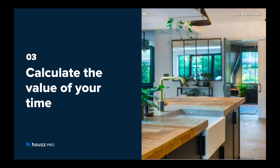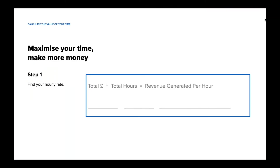Now for our third section — let's calculate the value of your time. To know what your time is truly worth, you'll need to do some math. Grab a calculator and get ready to crunch some numbers. First, we'll calculate the amount of revenue you brought into your business for the year. How much revenue did you generate last year? Then estimate the total time you spent working — how many total hours did you work? If you need to estimate, a 40-hour work week throughout the year is 2,080 hours.